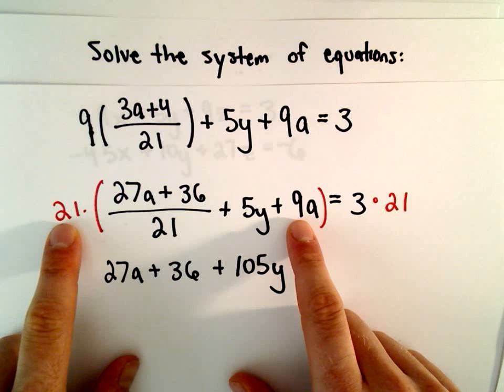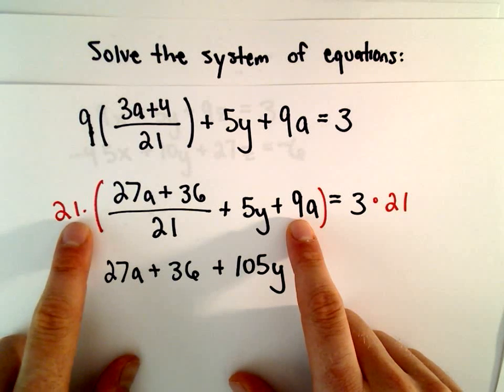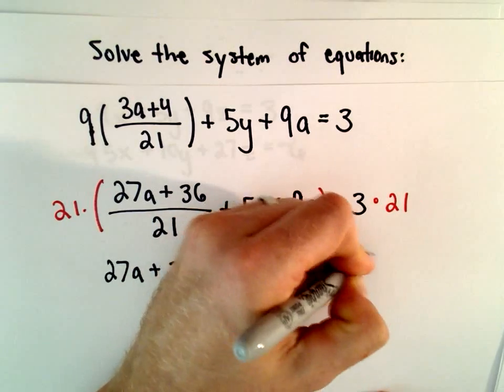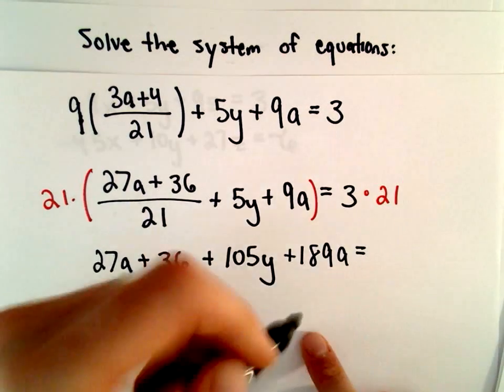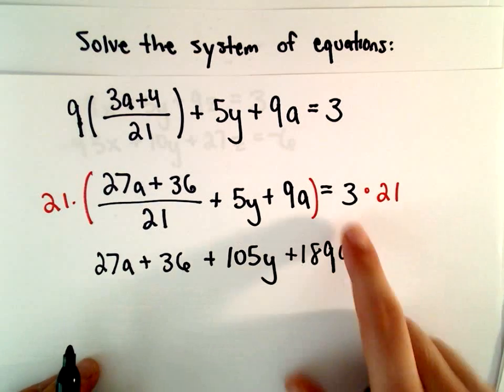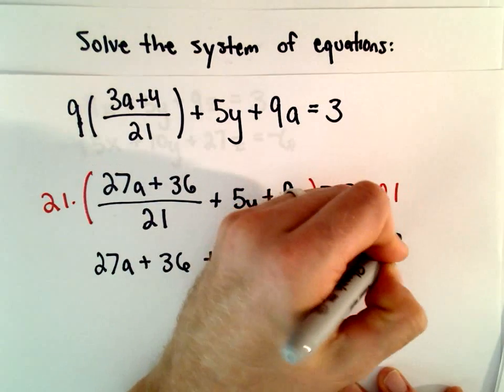And then 21 times 9a. Let's see. 20 times 9 would be 180. And then we would need another 9. So that would be 189a. My 9s and my a's look a little similar. So I'm going to try to make the 9s a little distinct here. 3 times 21 will be 63.